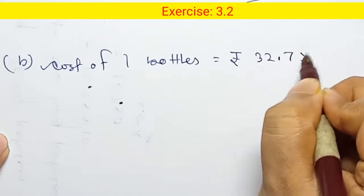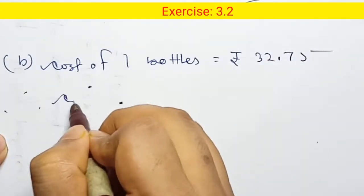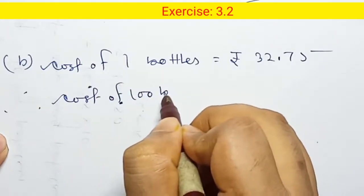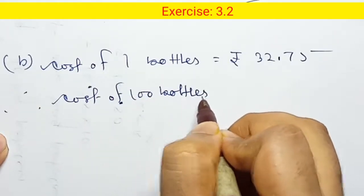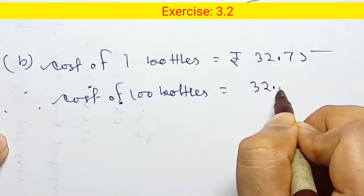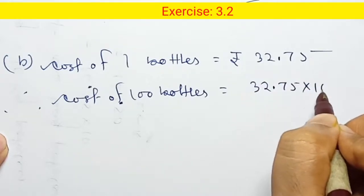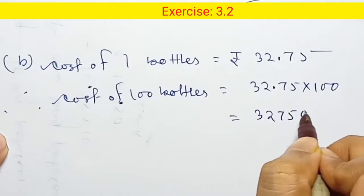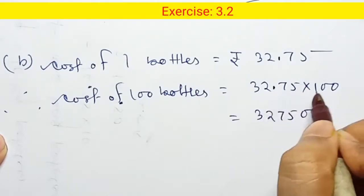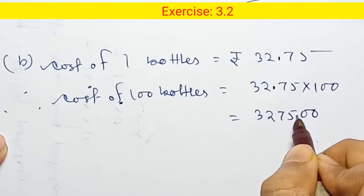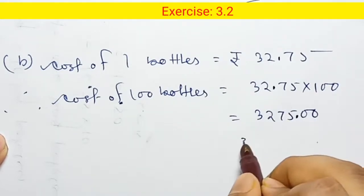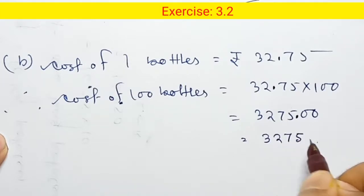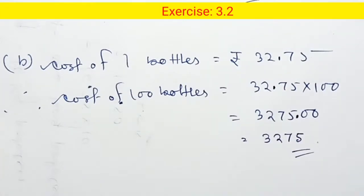Cost of one hundred bottles: cost of 1 bottle is rupees 32.75. Therefore, cost of 100 bottles equals 32.75 into 100. Multiplying by 100 shifts the decimal point 2 places to the right. Answer is rupees 3275.